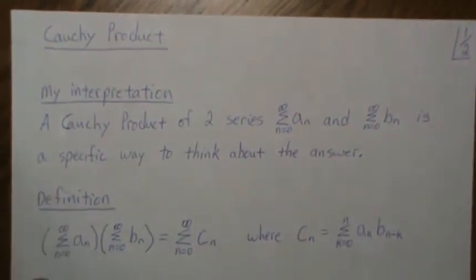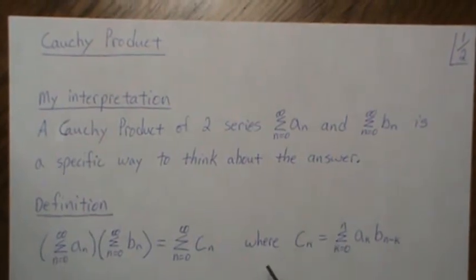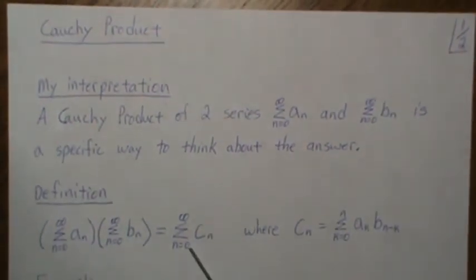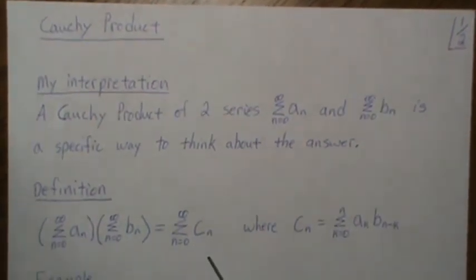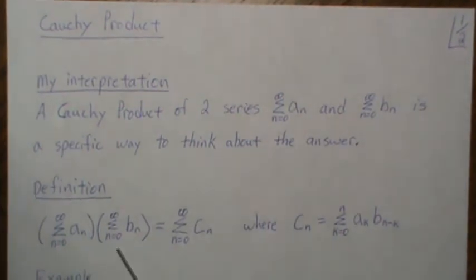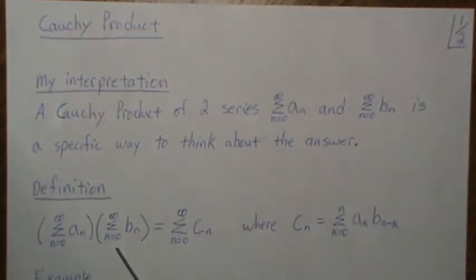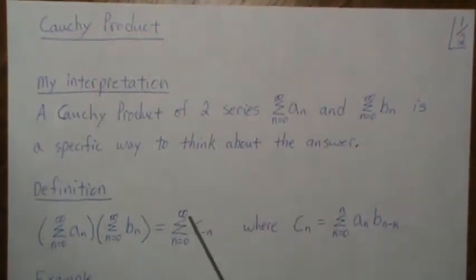Now that could be more vague, but let me show you what I mean. This is the definition of a Cauchy product: we have the product of two infinite series and it equals this infinite series.